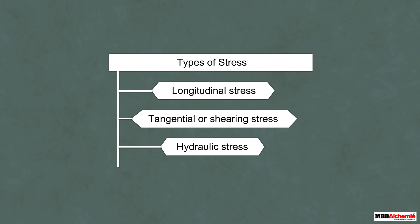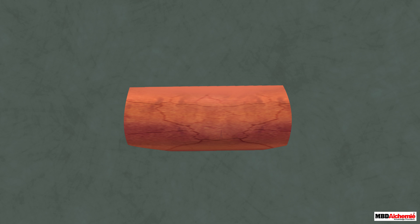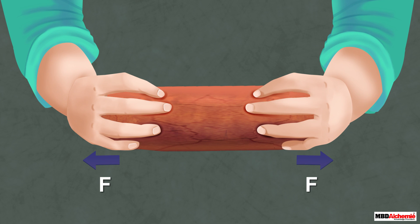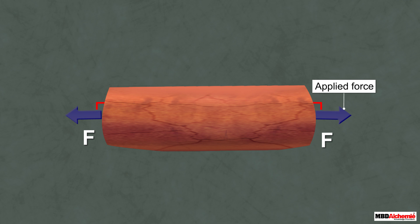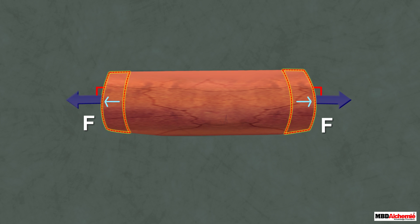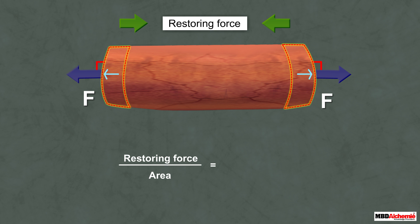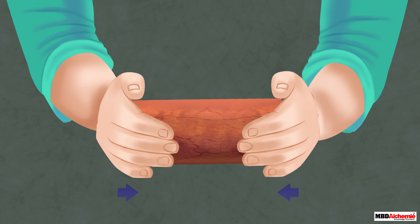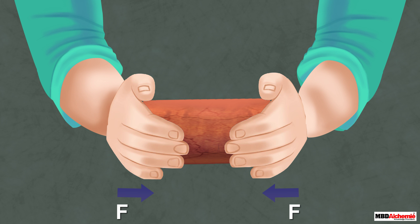Let us do an activity to understand longitudinal stress. Take a cylinder made of clay and stretch it from its two ends so that the applied forces are normal to its cross-sectional area. You will observe that the length of the cylinder increases. In this case, the restoring force per unit area — that is, the stress — is called tensile stress.